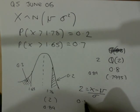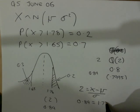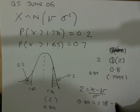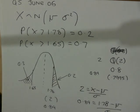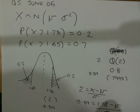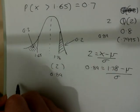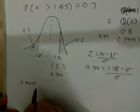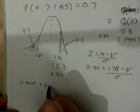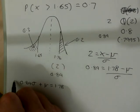So, I can say 0.84 equals 1.78 minus mu all over sigma. And then, if I write that out, I get my equation 1. I'm going to say that's 0.84 sigma plus mu equals 1.78. And that is my first equation.